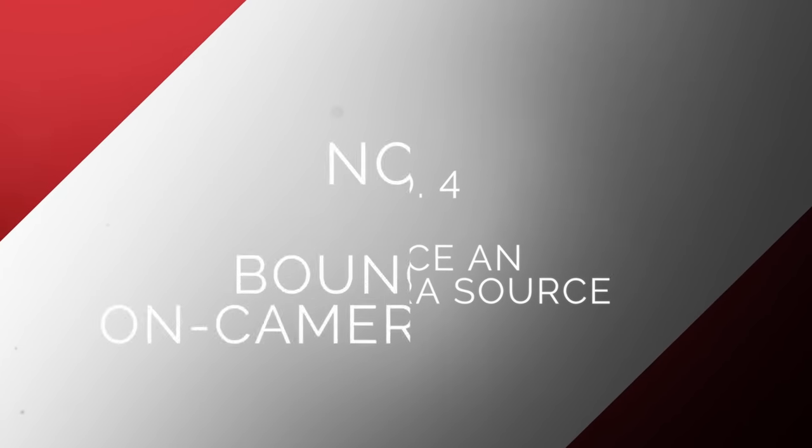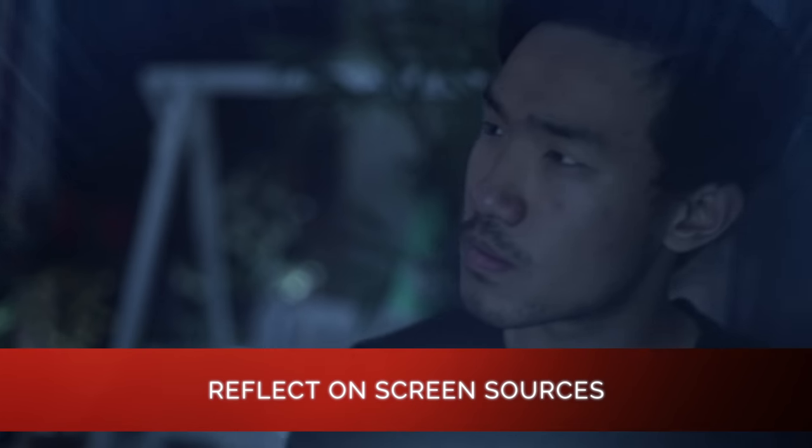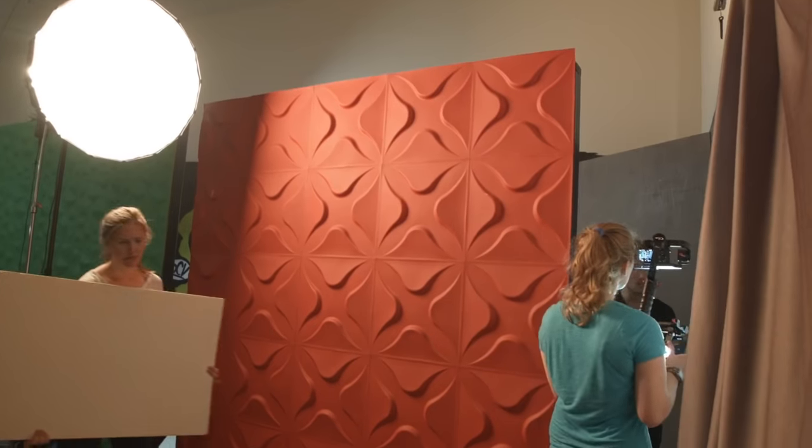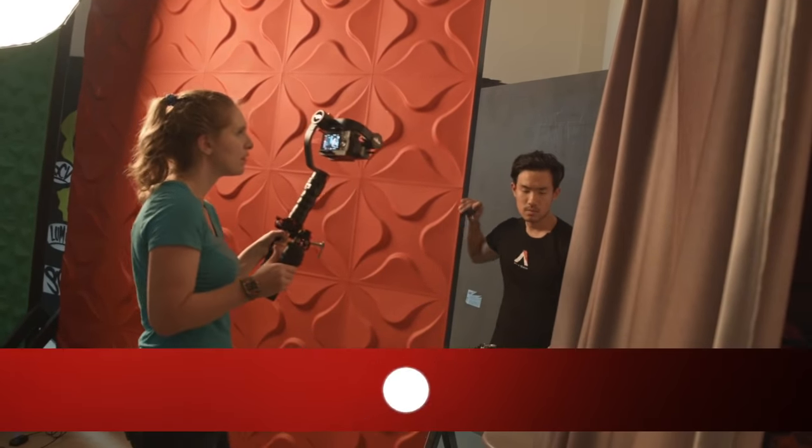So the next thing we did is we used a flashlight with a white card to give a return for your face. And that became your key. In this case, the light is in the frame. Yeah. So this actually is using the actor essentially as carrying their own key. And you could use that with a lantern, any kind of tablet.